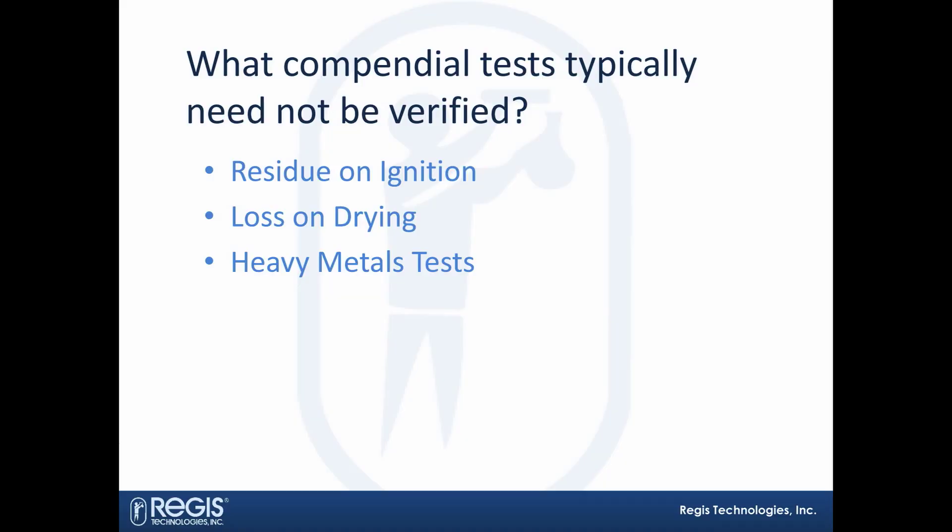There are a few compendial tests you really don't have to do verification for, and they're listed here. Residue ignition is basically a burning test where you're trying to destroy the material — if you're doing it properly, it shouldn't matter what you're burning. The USP does mention that if appropriate, you can omit these from method verifications.